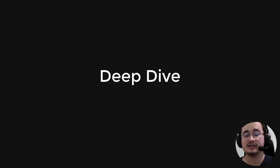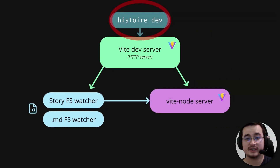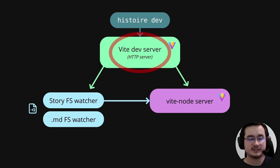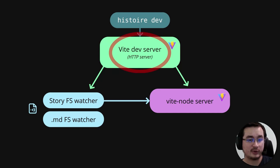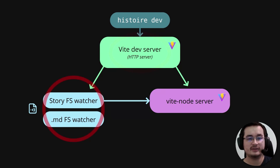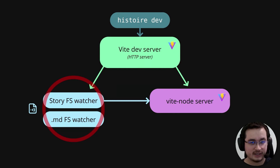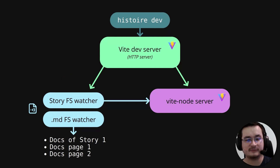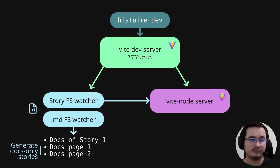Let's take a look at how Histoire works under the hood. First, let's see what happens when you run the Histoire dev command, which is used to develop your Histoire application. It starts the Vite development server, which is very similar to what you do with Vite directly, except it has a lot of configuration-specific twists on top of it. We also have a few watchers on your file system scanning for files — one looks for your story files, and the other finds markdown files, including standalone markdown files that generate docs-only stories.